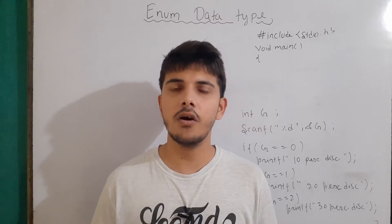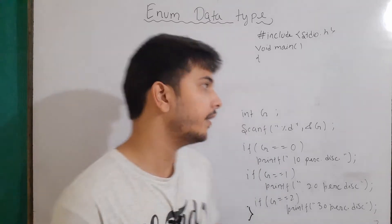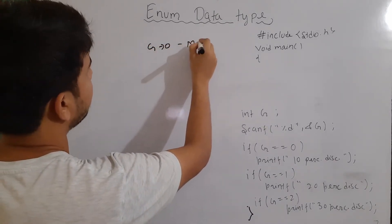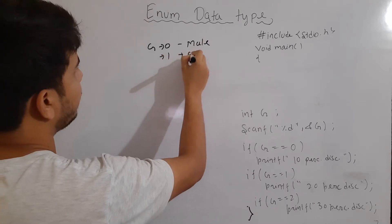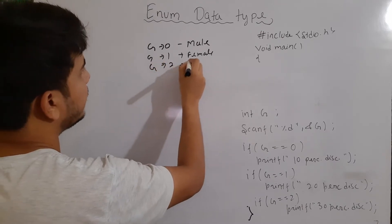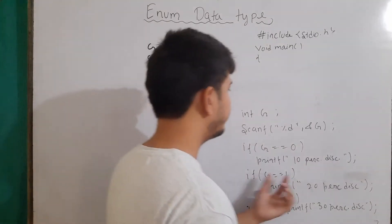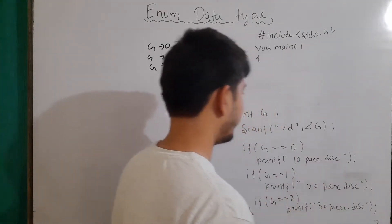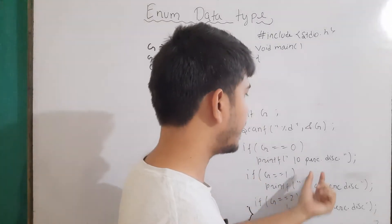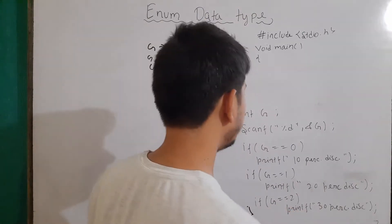To understand enums or enumerated data types, let's take an example in which we need to process the gender. If gender is zero, then it will be considered as male. If gender is one, then female. And if it is two, then it will be considered as others. Now, based on the gender, the amount of discount will be provided. For example, if g equals zero, then the discount will be 10%. If g is one, then 20%. And if g is two, then 30%.